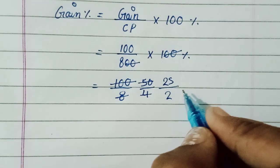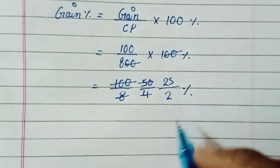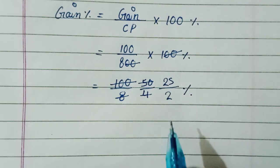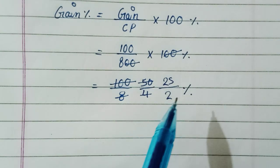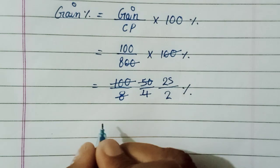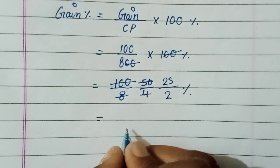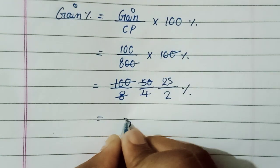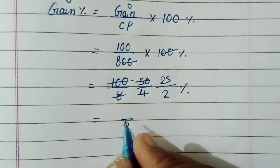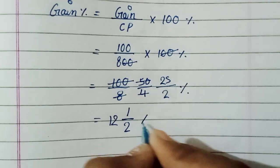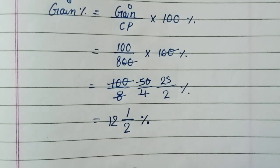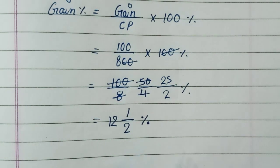Now convert it into the mixed fraction. After converting into mixed fraction we get 12 and 1 upon 2 percent. So 12 and 1 upon 2 percent, this is the gain percent.